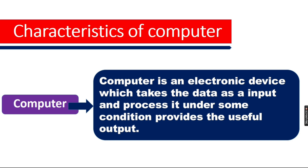First, a computer is an electronic device which takes the data as the input and processes it under some instructions and provides the useful output. For example, a user gives data as input and the computer processes it under some instructions.